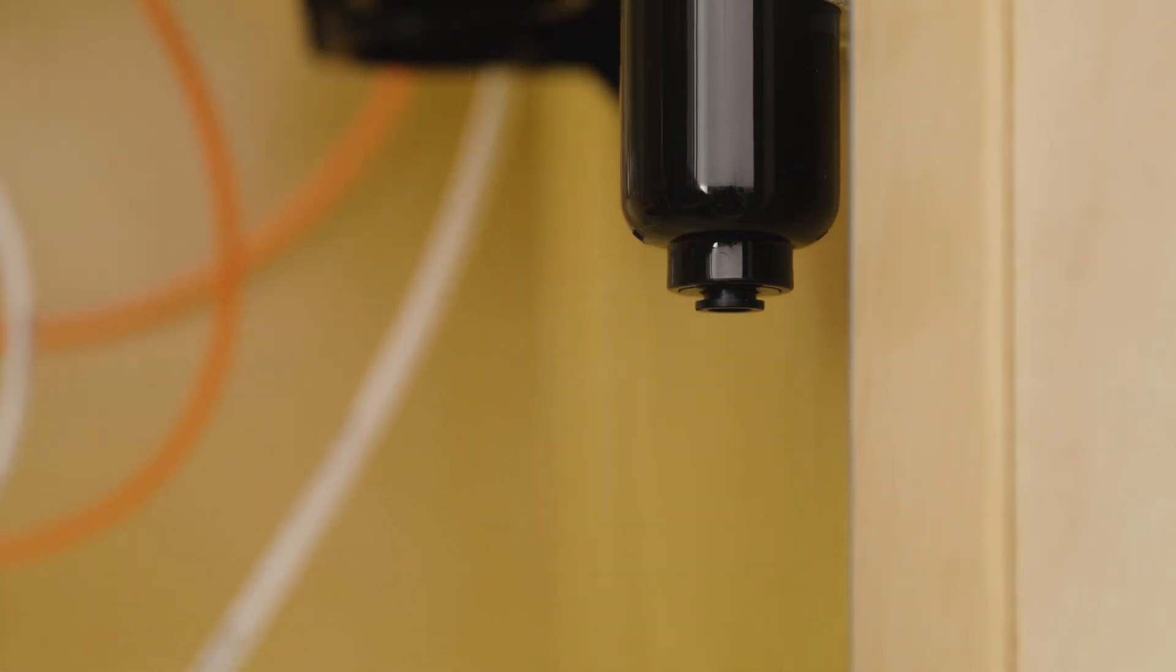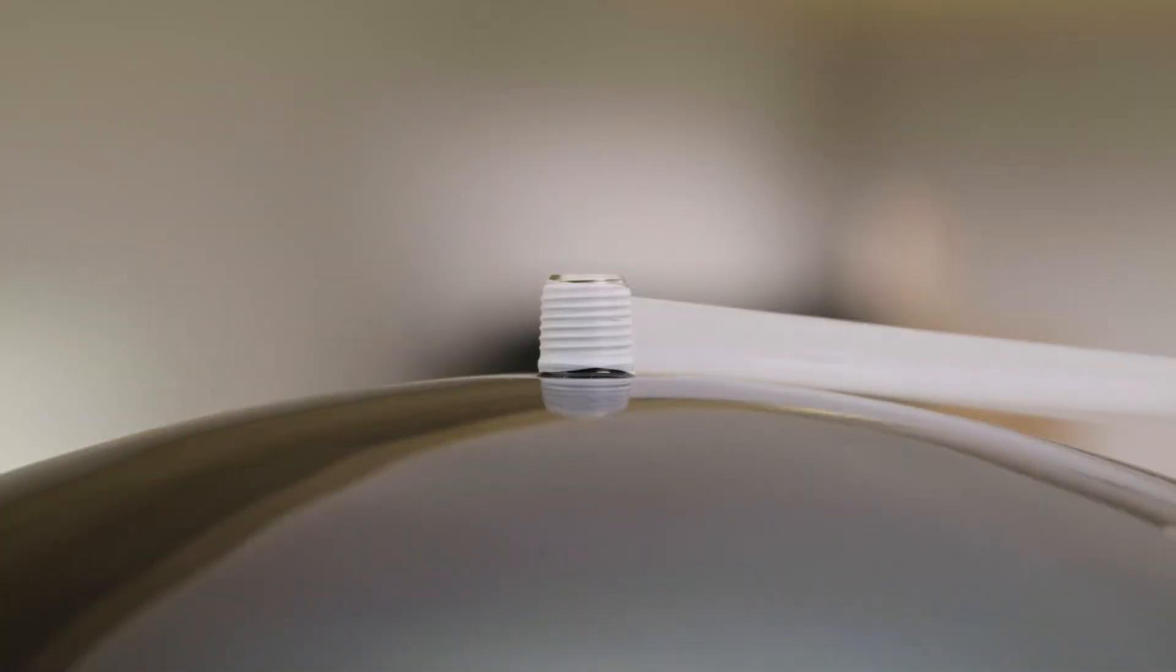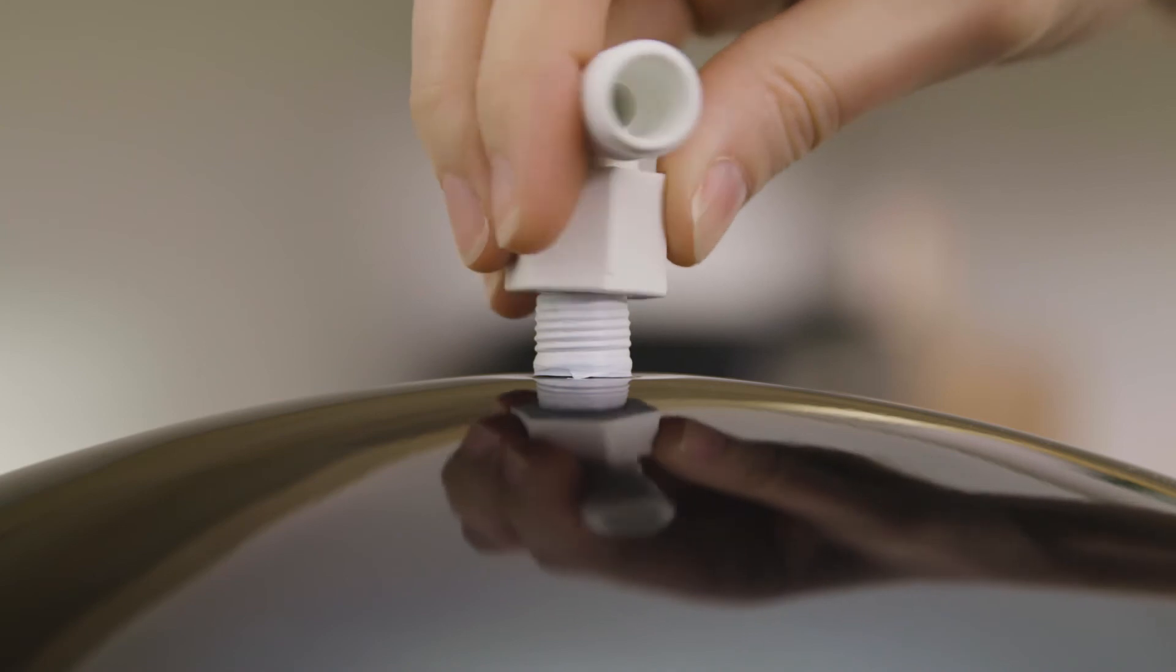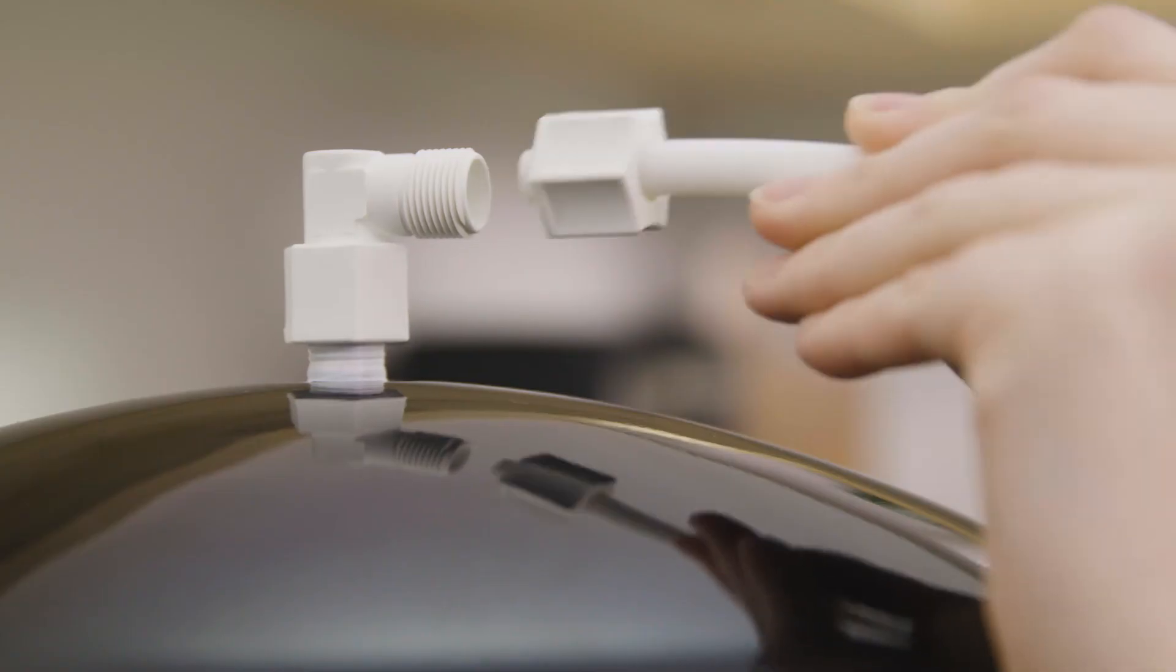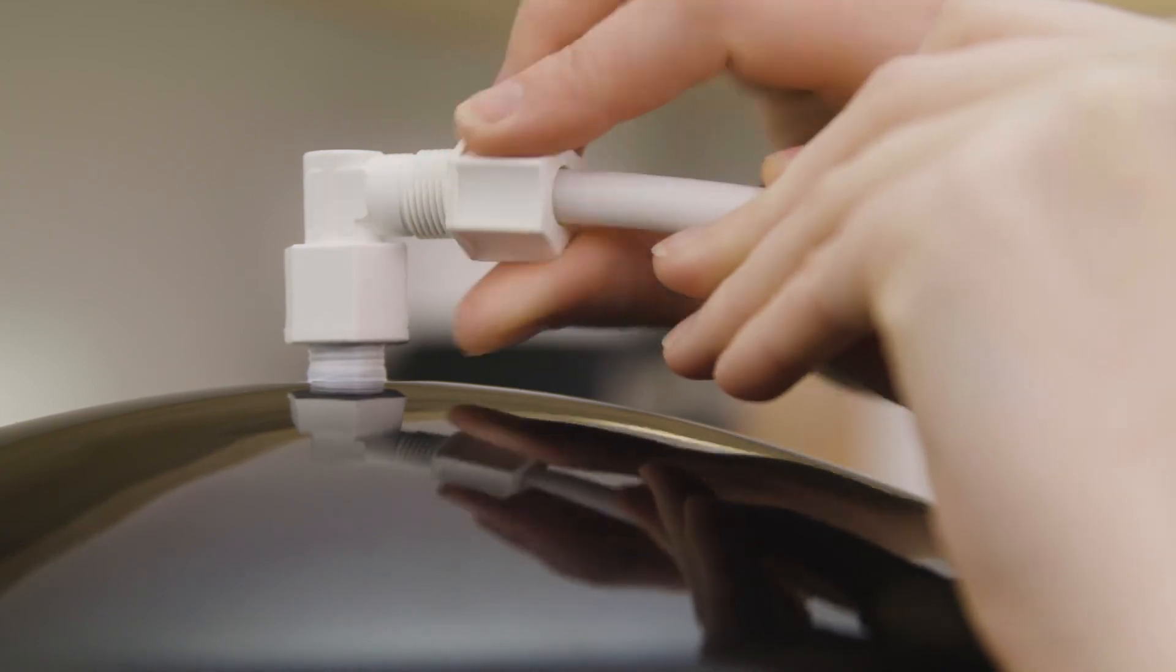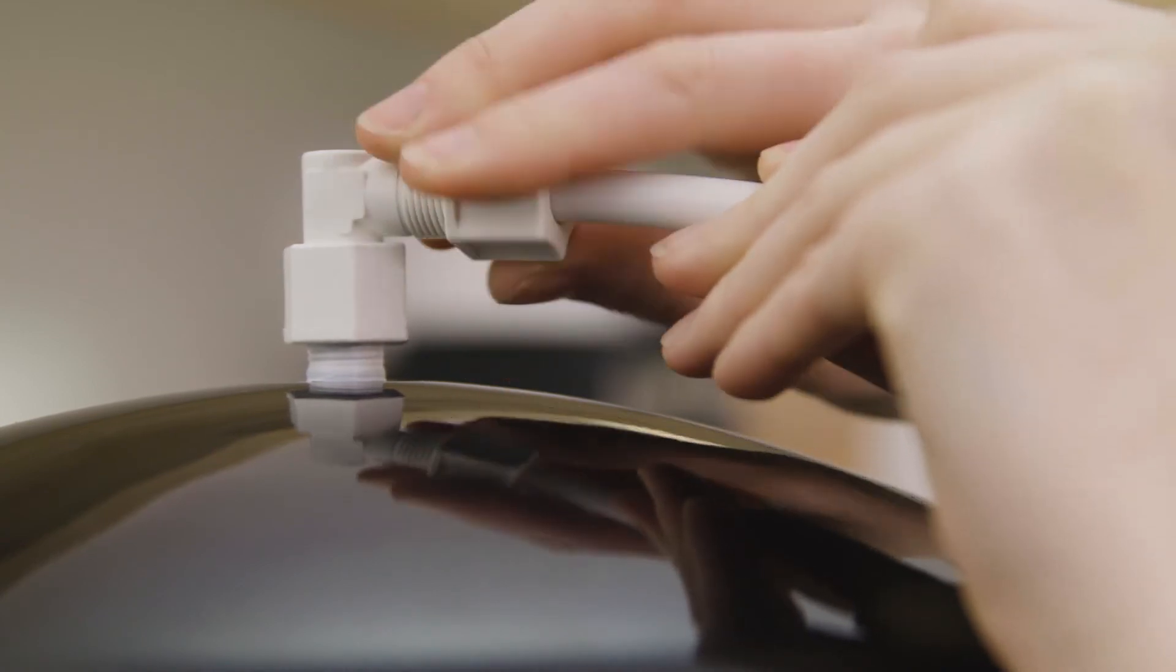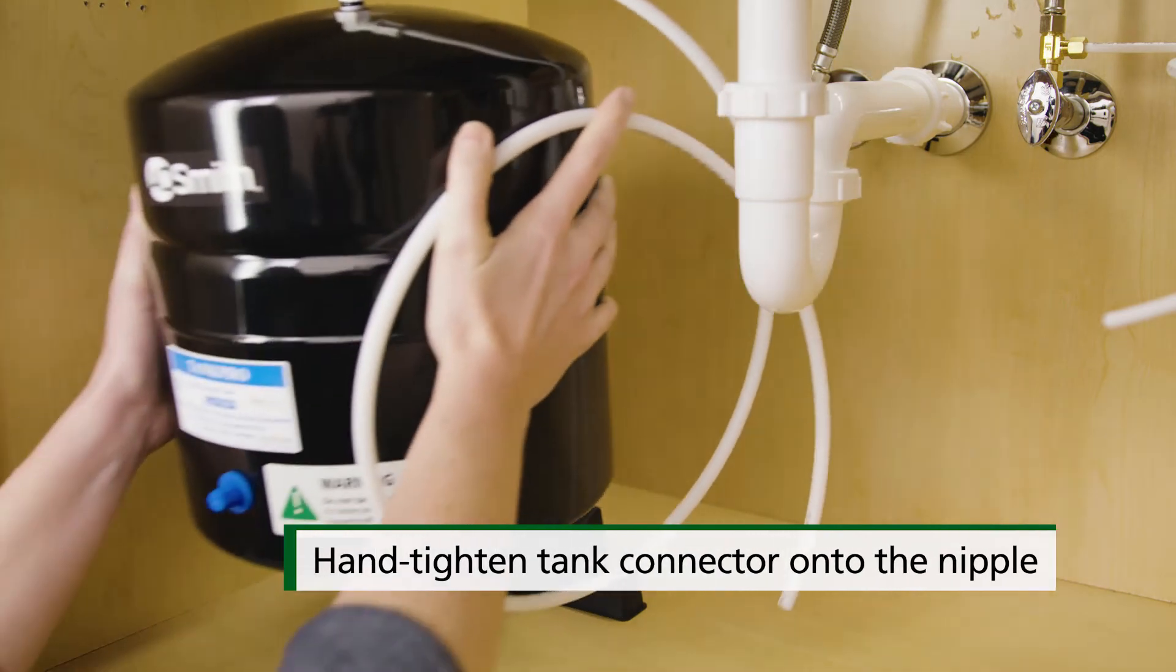Next, you'll need to install the water storage tank. Wrap plumbers tape four to five times clockwise around the nipple on top of the tank. Unscrew the compression nut from the tank connector and slide it onto your tubing. Then push your tubing into the connector. Slide the nut onto the threads and tighten with a wrench. Place the tank near the system manifold.